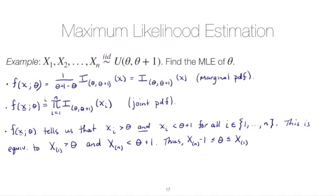So that means theta will not go beyond the minimum value. So it's going to be less than the minimum value. And it will be greater than the max minus one. And from there, we can write down the likelihood function.